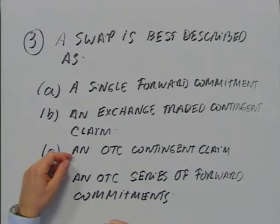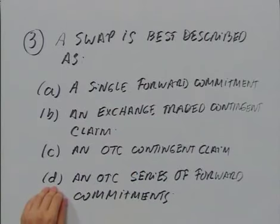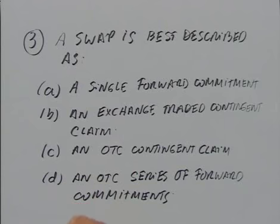Is a swap a contingent claim? No, a swap is not a contingent claim because the payoff of the swap does not depend on the occurrence of an event in the future. Therefore, the correct answer is D, an OTC series of forward commitments. Remember that a swap is a series of forward commitments that trades over-the-counter.